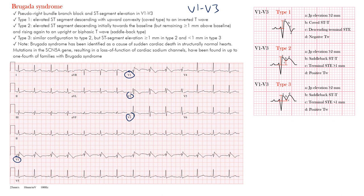We want to differentiate three different types. Type 1: we're going to see an elevated ST segment that has a descending upward convex coved-type inverted T wave. Looking at Type 1 — labeled a, b, c, d — at point 'a' you have J-point elevation. The J point is essentially the end portion of the QRS complex, so J-point elevation is essentially where ST segment elevation begins.